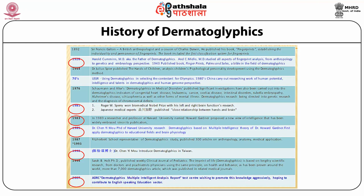Dermatoglyphic research was directed into genetic research and the diagnosis of chromosomal defects. In 1994, Sarah B. Holt was another leading dermatoglyphicist from the USA who studied Dermatoglyphics in relation to psychiatric, medical, and health problems, publishing more than 700 papers on Dermatoglyphics related to ecological and health and behavioral issues. Many other historical dimensions of Dermatoglyphics — including inheritance of finger patterns, sole patterns, and palmar characteristics — have not been fully covered here due to time constraints.